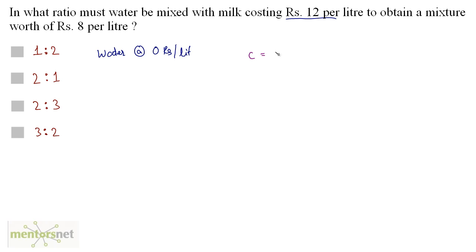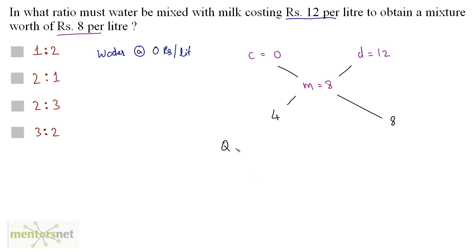The cheaper rate equals 0, the costlier rate equals 12, and the mean price M equals 8. On the left hand side, 12 minus 8 equals 4. On the right hand side, 8 minus 0 equals 8. According to the allegation rule, the quantity of the cheaper upon the quantity of the costlier equals 4 by 8, which is 1 by 2. Since water is cheaper and milk is costlier, QC by QD is 1 by 2. Option A is the correct answer.